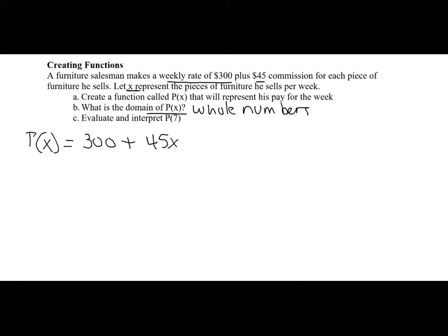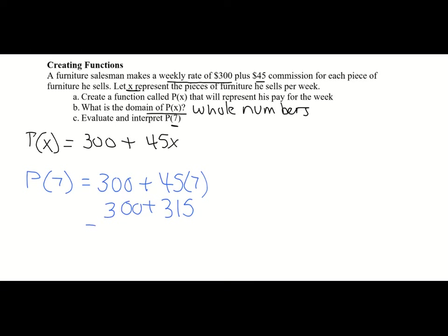The last thing they want us to do is evaluate and interpret P of 7. We're going to substitute 7 for X: 300 plus 45 times 7. That's 45 times 7 equals 315, plus 300, so P of 7 equals 615. Interpreting this: if the salesman sells seven pieces of furniture, his weekly salary is $615 for the week.